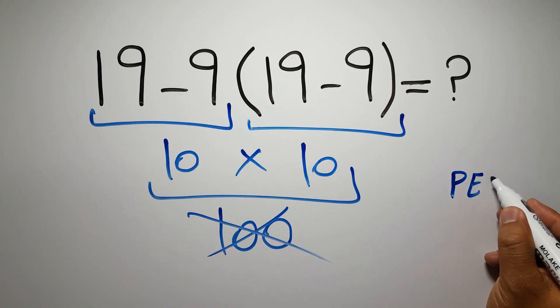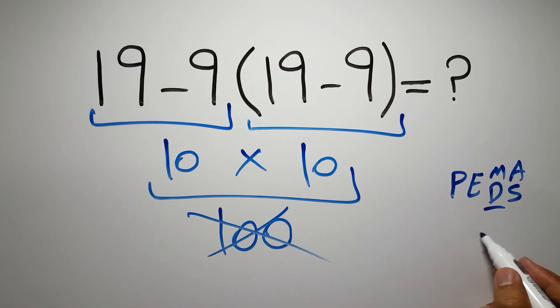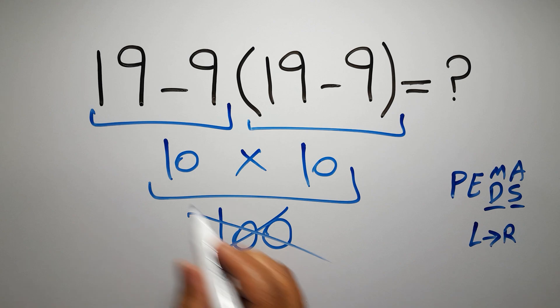Then exponents, then multiplication or division, and finally addition or subtraction. Remember that multiplication and division have equal priority and we have to work from left to right. The same applies to addition and subtraction.